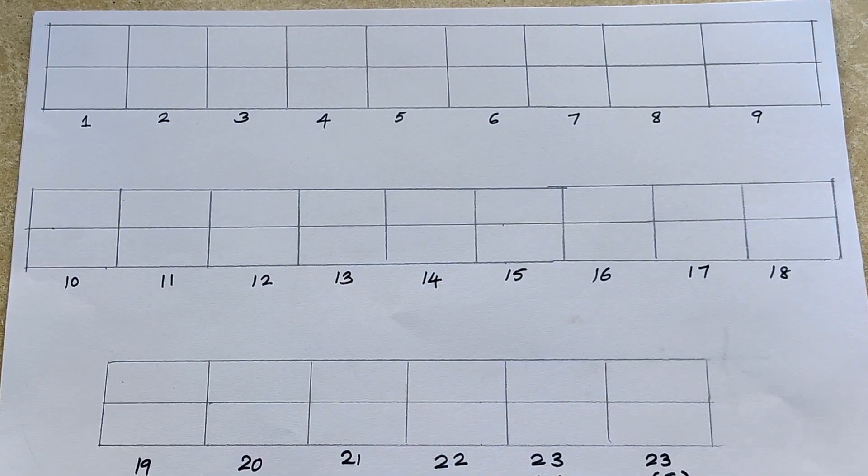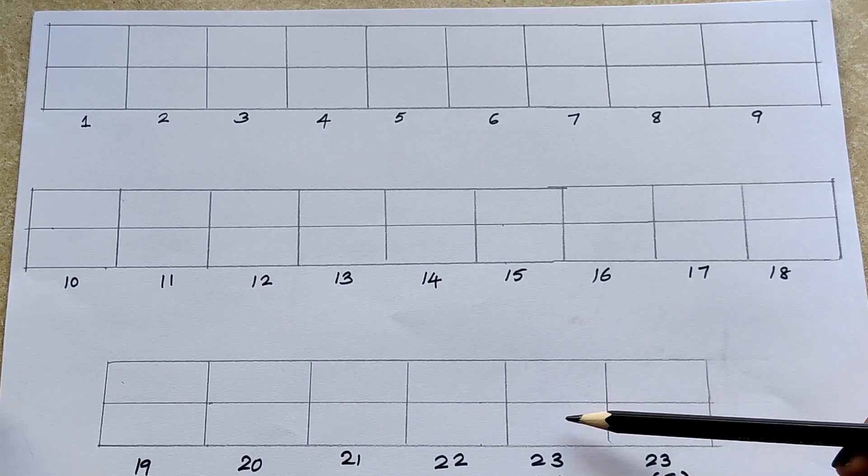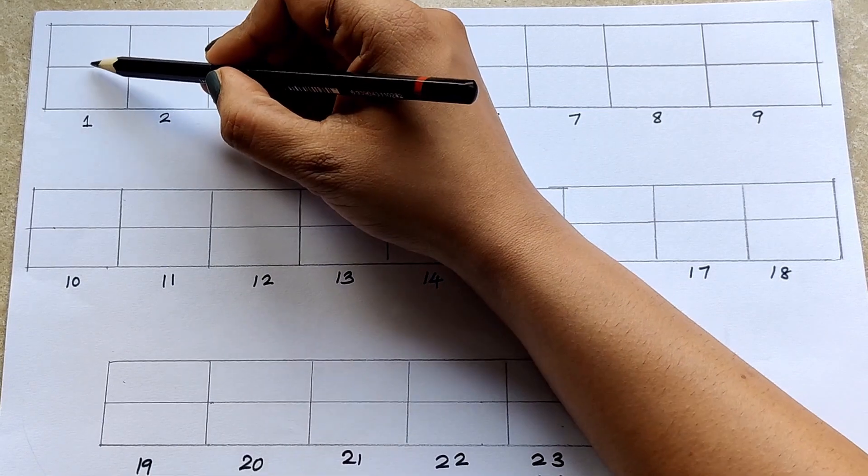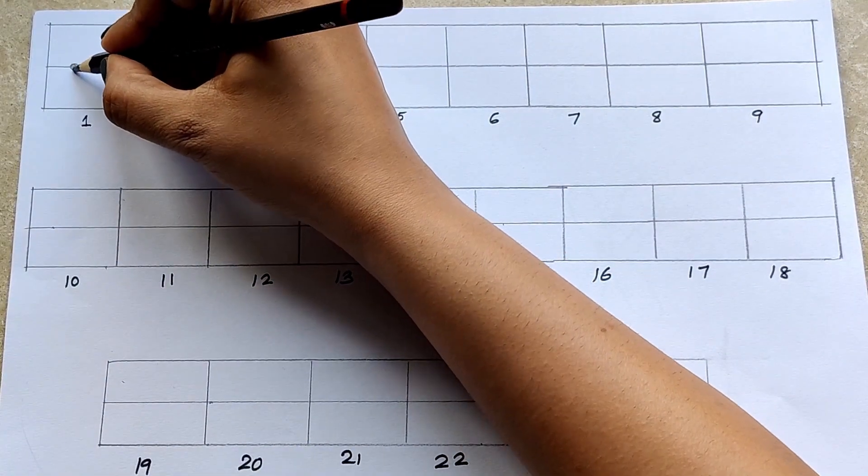As you can see, I have made 23 blocks here and I will be drawing haploid chromosomes. The chromosomes are arranged in decreasing order of their size.